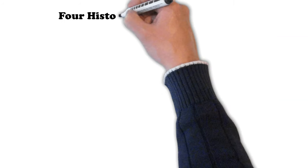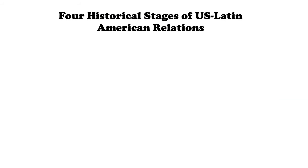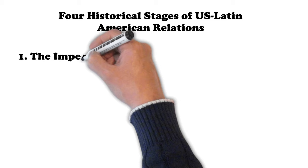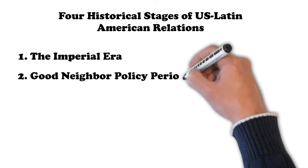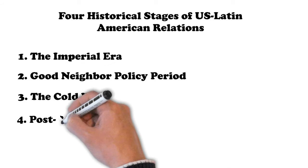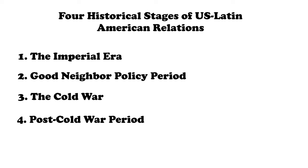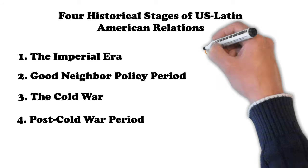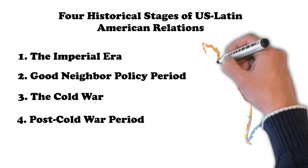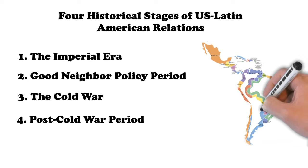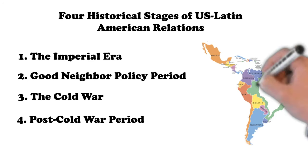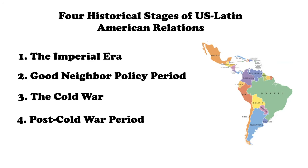The history of inter-American relationships can be divided into four distinct stages: the Imperial Era, the time of the Good Neighbor Policy, and the Cold War and Post-Cold War periods. The underlying logic behind these disparate stages is American power and interests — the way in which the U.S. has chosen to employ the power differential it has always enjoyed vis-à-vis Latin America, and the kinds of things the United States has wanted from the region, whether territory, resources, or ideological alignment.